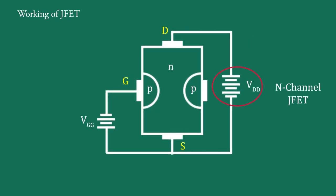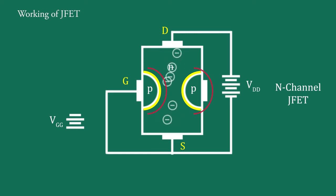When a battery VDD is connected between drain and source and battery VGG is disconnected, means voltage on gate is zero, then these both PN junctions establish depletion layers like this. The electrons will flow from source to drain through the channel between the depletion layers. The size of these layers determines the width of the channel and hence the current conduction through the channel.